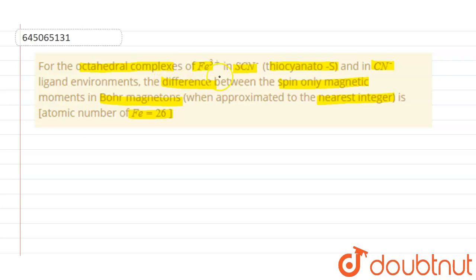The question says we have an octahedral complex of Fe in plus 3 oxidation state and the ligand at first present is SCN minus. This Fe3+ also makes a complex with CN minus and that is also an octahedral complex. We need to calculate the difference in magnetic moment between the two.